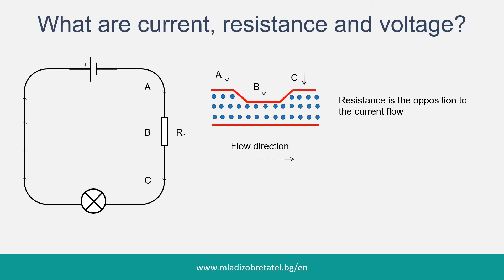Resistors limit the amount of charge that can pass by a point. And it doesn't matter which point you measure — A, B, or even C. Because if you look upstream of the resistor, the charge is hanging around, waiting to move through the resistor.